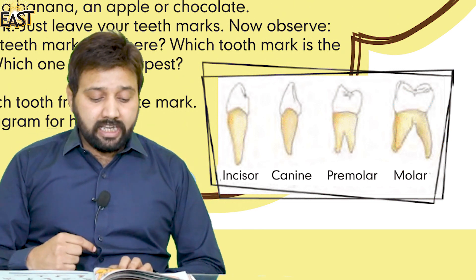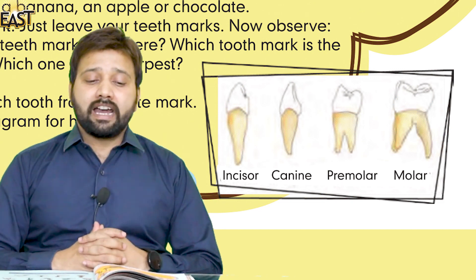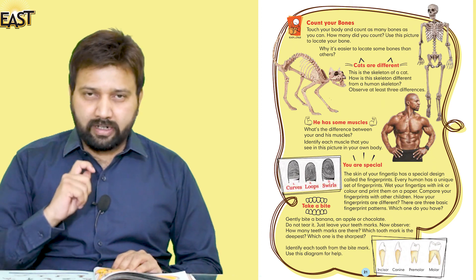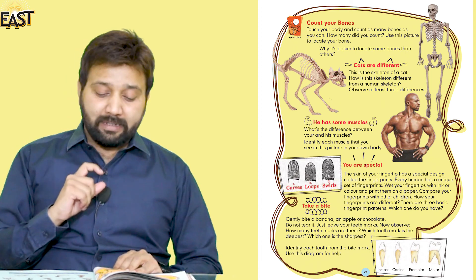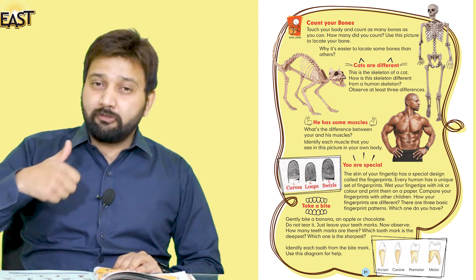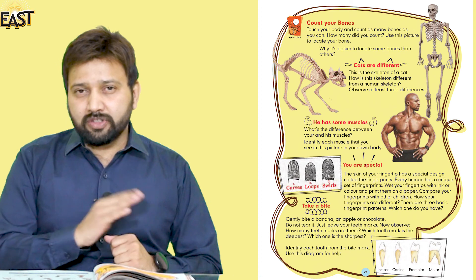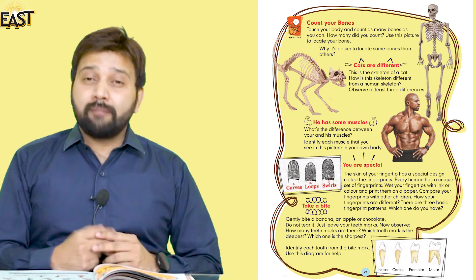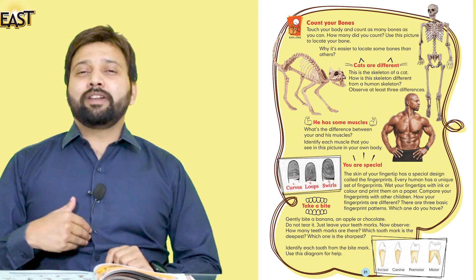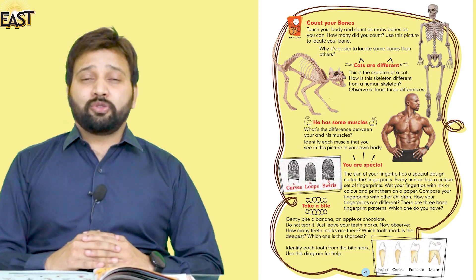آپ نے identify کرنا ہے each tooth from the bite mark — use the diagram for help. The four types are: incisor، canine، pre-molar، اور molar. آج آپ کی home assignment یہ ہے: banana یا chocolate پر دانتوں کے نشان لے کر بتائیں کہ کون سا sharp اور کون سا deep ہے؛ fingerprints کی picture teacher کو بھیجیں؛ اور cat اور human skeleton میں کم از کم دو مزید differences لکھ کر بھیجیں. کل انشاءاللہ آپ سے دوبارہ ملاقات ہوگی — اللہ حافظ۔